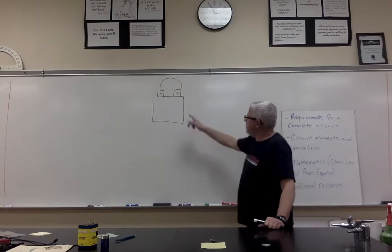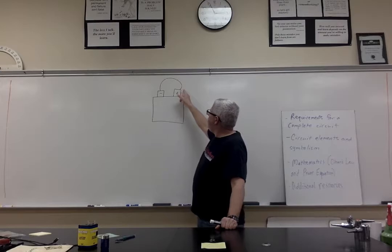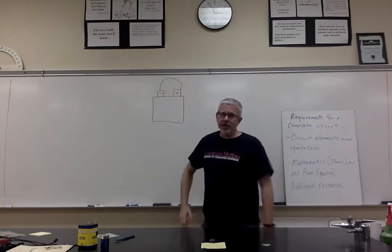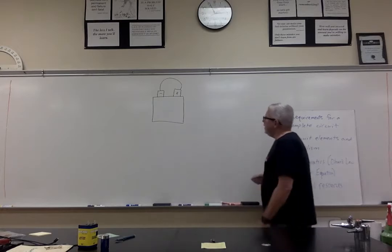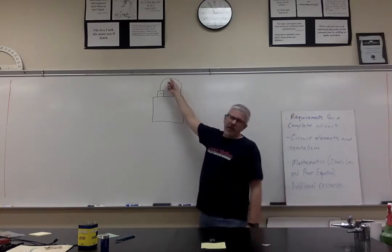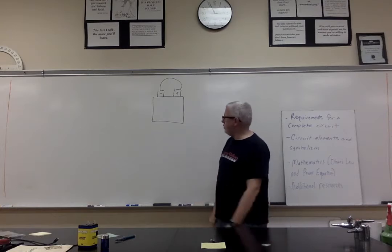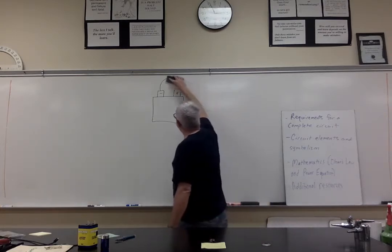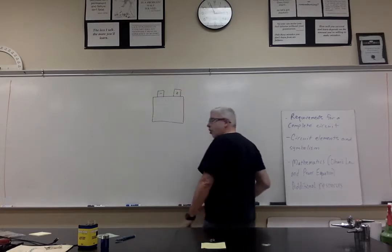This wire, under ideal conditions, is having zero resistance. Well, if you have a difference in potential energy from here to here and you end up having no resistance, that means you're going to have a heck of a lot of current — technically an infinite amount of current. But in reality, most wires have a little bit of resistance, and we're going to ignore that for the most part.